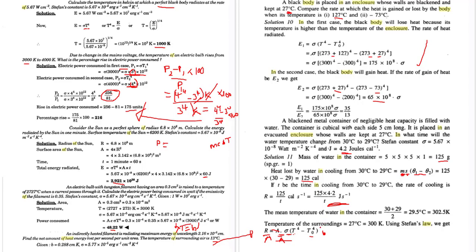Power lost equals — going back to Stefan's law formula for heat exchange — Power = area × Stefan's constant × emissivity × (T_body^4 − T_surrounding^4). Since it is a blackened metal container, emissivity equals 1. Due to Prevost's theory, since the water is in an enclosure at 27°C and the water has its own temperature, there is a net temperature change. The mean temperature of the water from 30 to 29 is (30+29)/2 = 29.5°C, which is the body temperature.